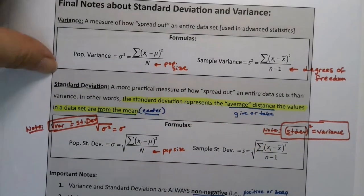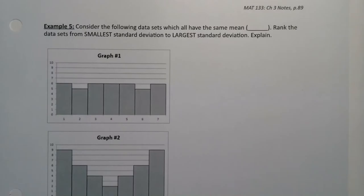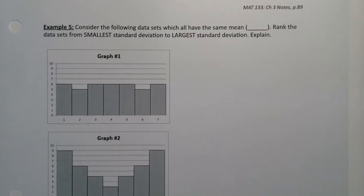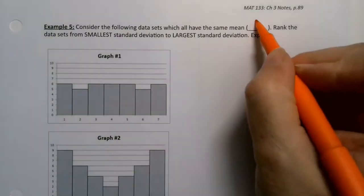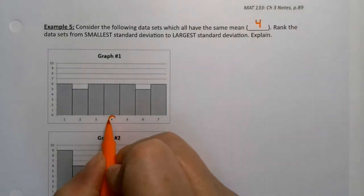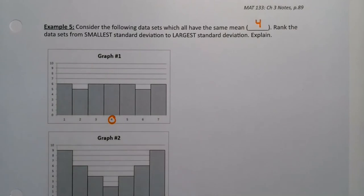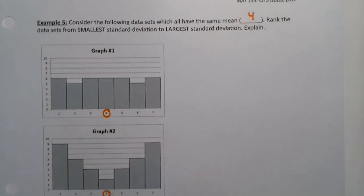Okay, now let's look at these three graphs. You want to consider these following data sets that all have the same center, and that center would be four. You can see it right here in the graphs, right?